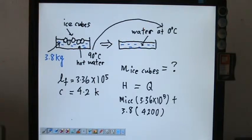In this question, we have the diagram of ice cubes being put into a container of hot water, 90 degrees Celsius. And the mass of the water is 3.8 kg.